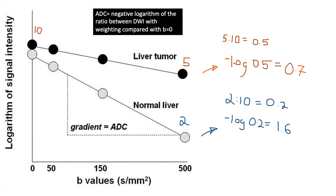If you are interested in the math of creating the ADC, it is calculated by the negative logarithm of the ratio between the DWI with weighting compared with that with no weighting. For example,